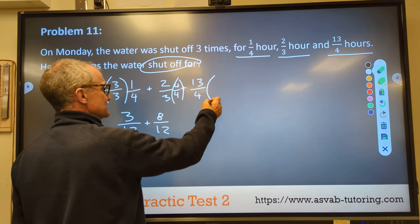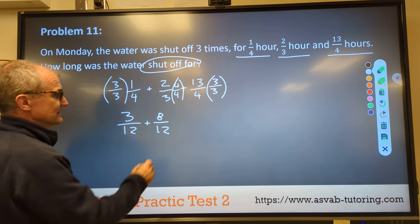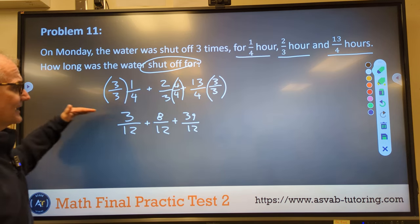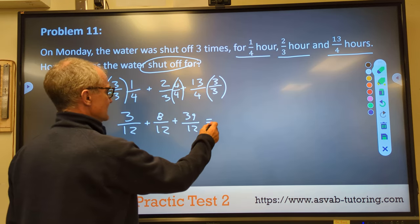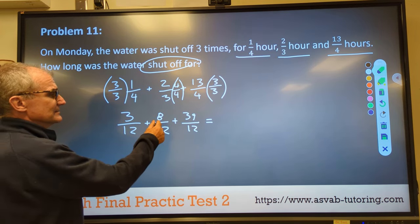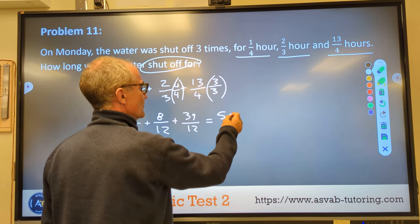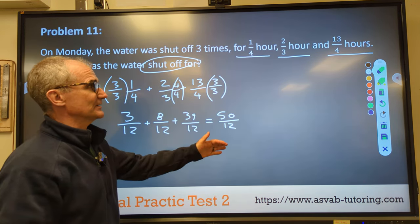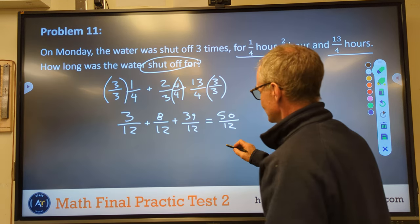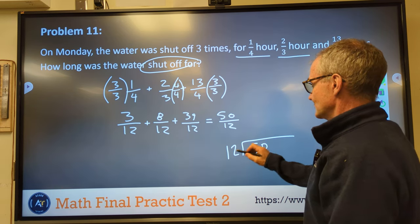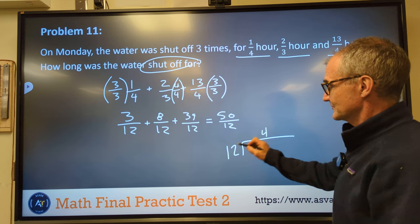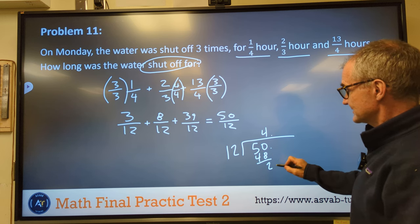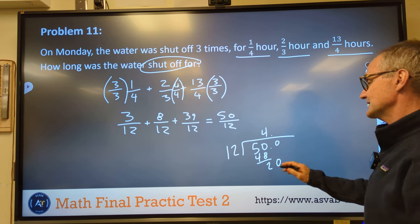And then this last fraction, I multiply it by 3 over 3 to get 39 twelfths. Now that I have that common denominator, I add across the top and keep that common denominator. 3 plus 8, 11. 39 and 11 is 50 over that common denominator of 12. We are talking about time, so it would be weird to call it 50 twelfths of an hour. So I'm going to do 12 into 50. 12 goes into 50 four times. 4 times 12 is 48. 50 minus 48 is 2. Bring down a 0 after a decimal place. 12 goes into 20 one time. 20 minus 12 is 8. Bring down the 0. 6 times.